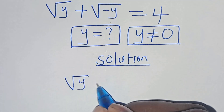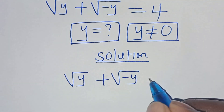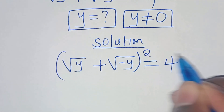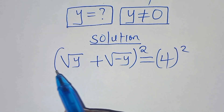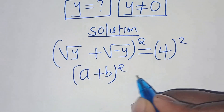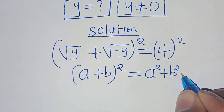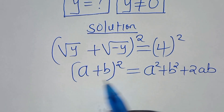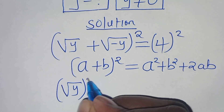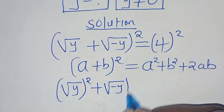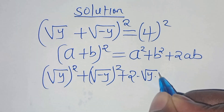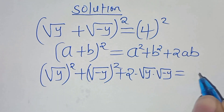We have the square root of y plus the square root of minus y equals 4. The first step is to square both sides. This part is in the form of (a + b)², which we can express as a² + b² + 2ab. Applying this identity, we have: square root of y raised to the power of 2, plus square root of minus y raised to the power of 2, plus 2 multiplied by square root of y multiplied by square root of minus y, equals 4 squared, which is 16.